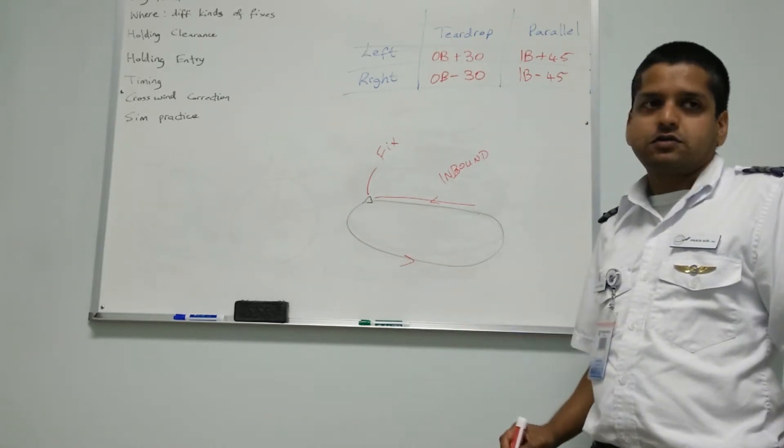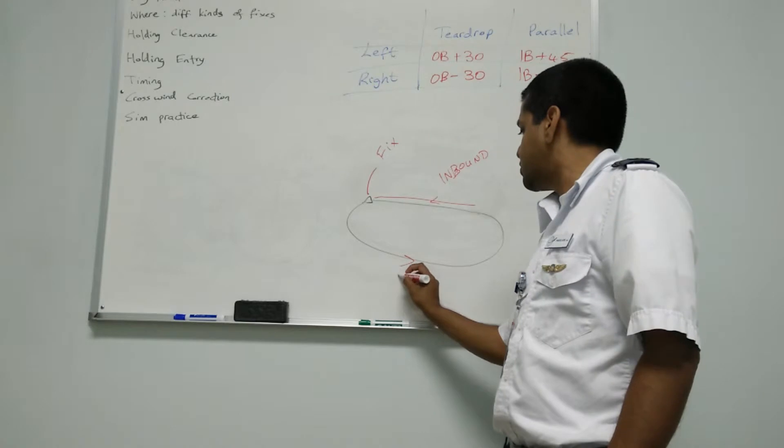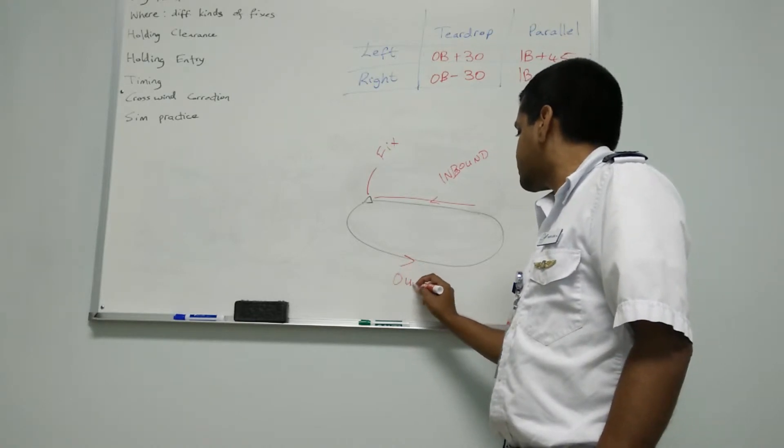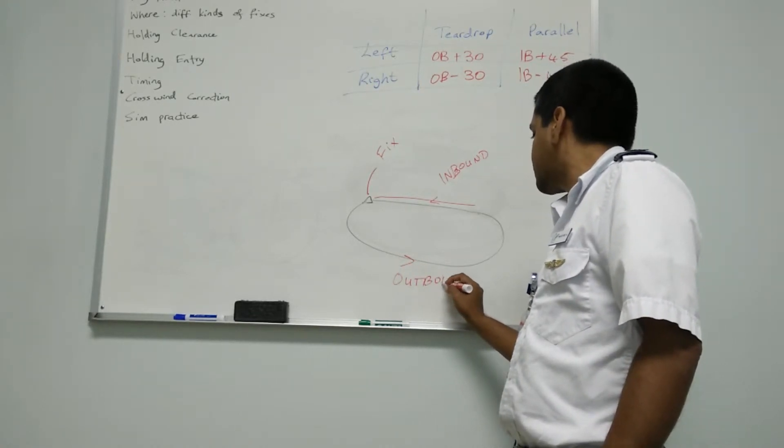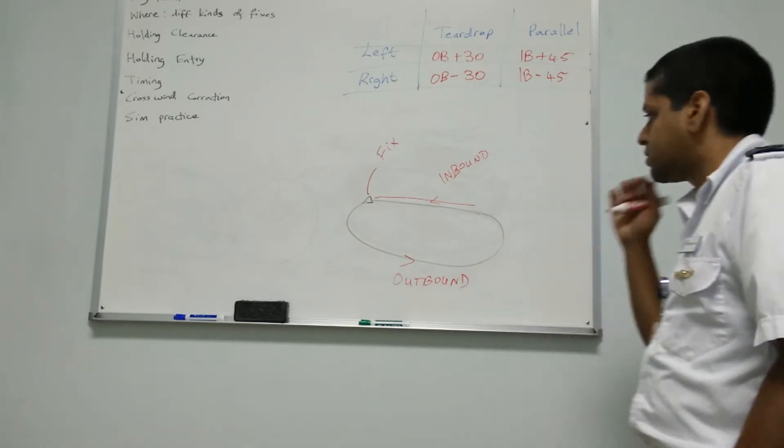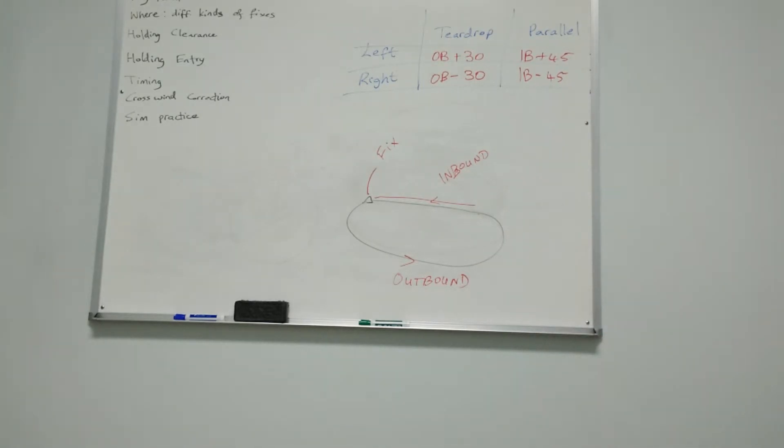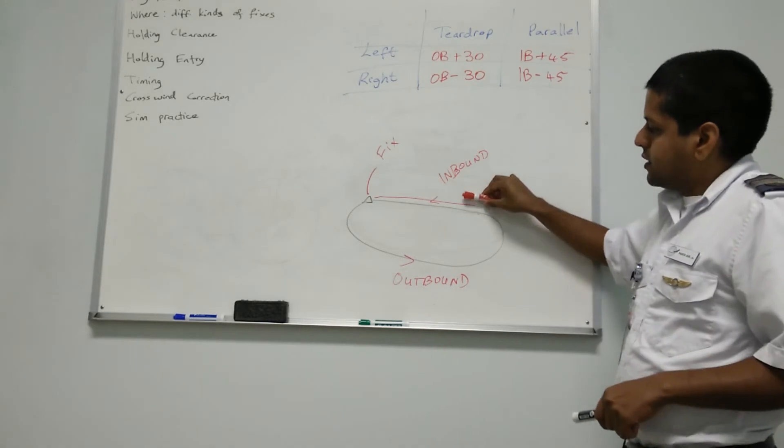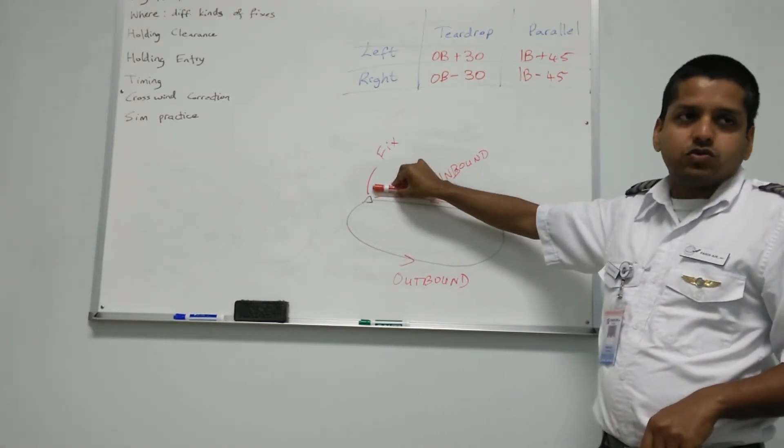So this is your outbound. I'm confused because in the chart always the fix on the right side, so I'm confused. All right, now it's okay? So here, you're always flying directly towards your fix.